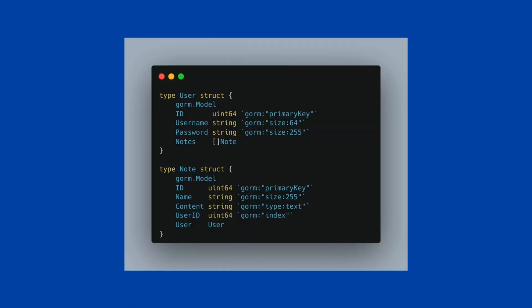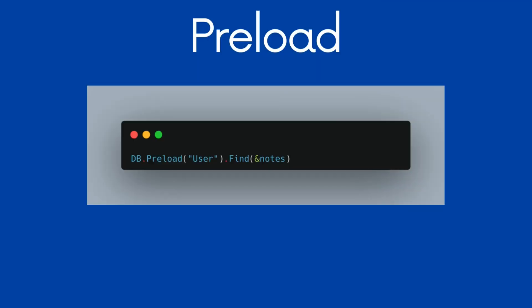Suppose we have an application where a user can create multiple notes. The model structures look like this, where the user ID in the notes table stores the ID of the user to whom the note belongs. If we want to read the user information while querying the notes, we can use the preload function like this. Let's see what it translates to in SQL.